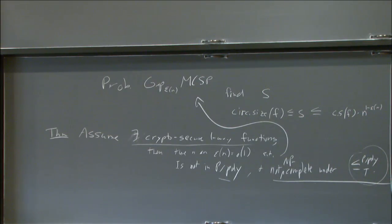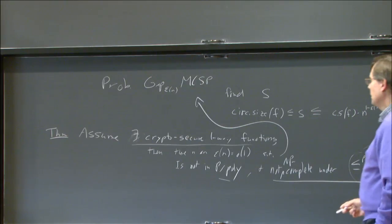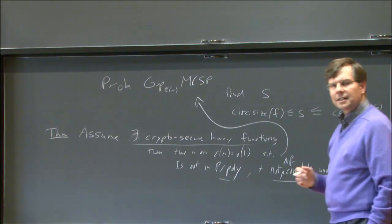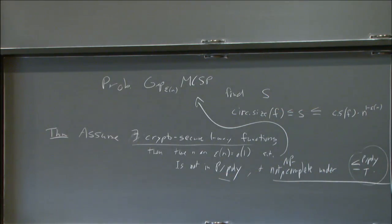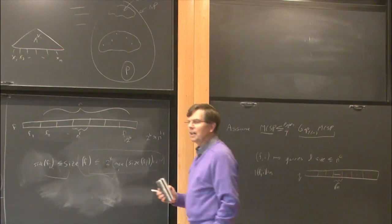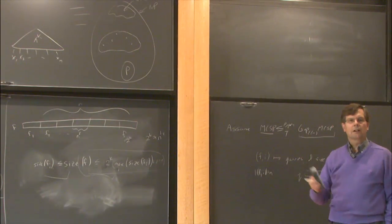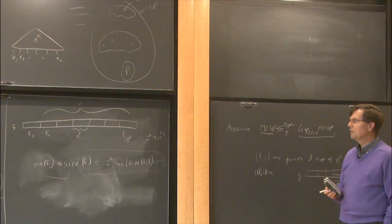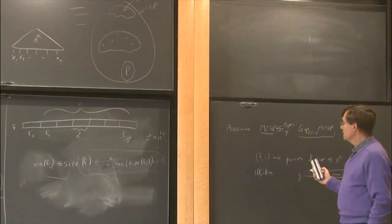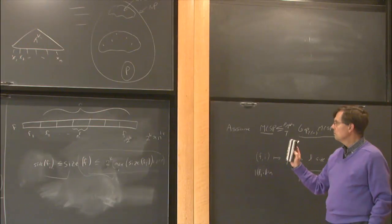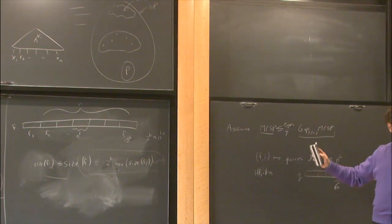So if you could reduce this way, you would end up with a P-poly or BPP algorithm for the minimum circuit size problem. It was already known that if the minimum circuit size problem were in P-poly, then there would not exist any cryptographically secure one-way functions. So that shows that it's not NP-complete.